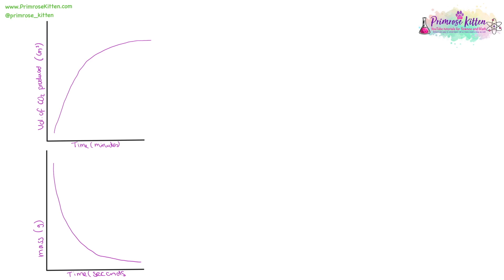When we are measuring the rate of reaction, we need to look carefully at the units used. For example, here we have volume in centimeters cubed over time in minutes, so here it would be centimeters cubed per minute. And the second one, we have time in seconds and mass in grams, so this would be grams per second.